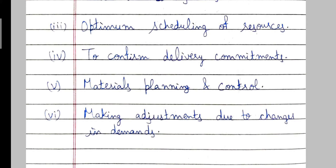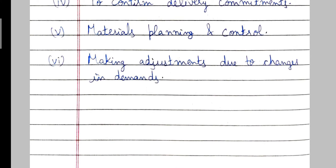Another objective is materials planning and control, so we can plan and control the materials which are going to be used in production. The last objective is making adjustments due to changes in demand. If there are sudden changes in demand by customers, we can make the required adjustments in the process so that we can meet fluctuating demand.